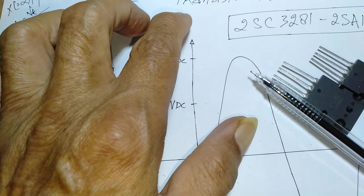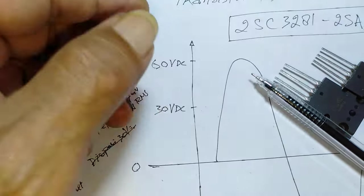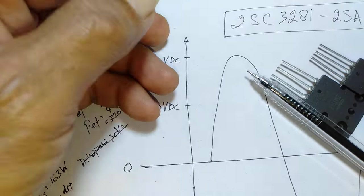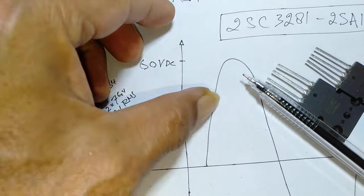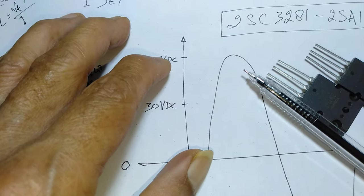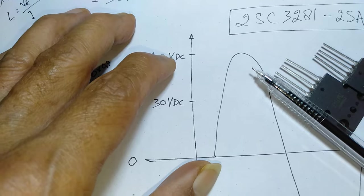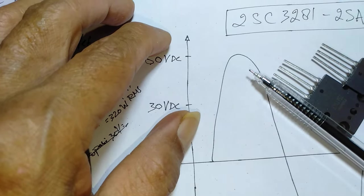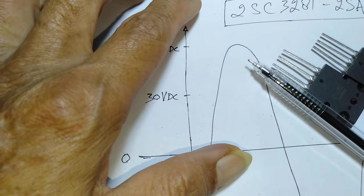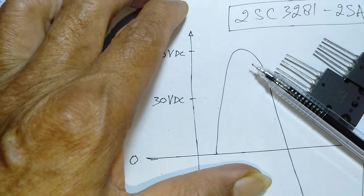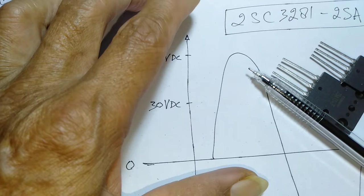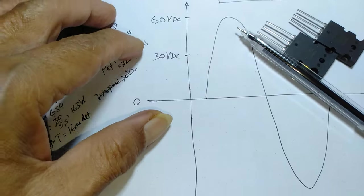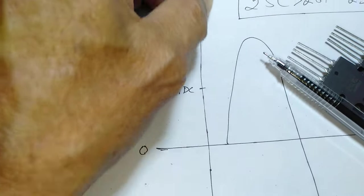Itu di atas 3 GHz itu nggak dijual bebas di pasaran, makanya kesulitannya di situ. Itu sudah dicari di pusat, pusat penjualan komponen di Asia ya, di benua Asia, itu pusatnya di Singapur guys. Ada plaza namanya ya, Simlim Tower ya. Nah di sana itu nggak ada dijual bebas guys ya, jadi barang itu adanya cuma di pabrik untuk kebutuhan bikin-bikin booster ya.